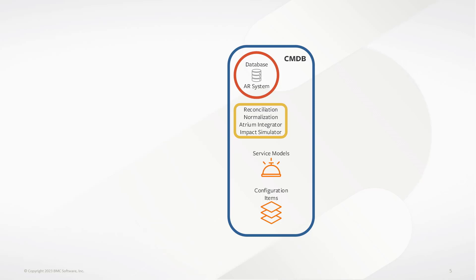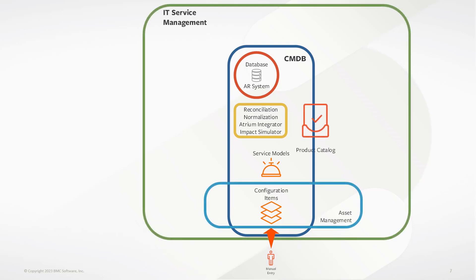How do you get your CIs into your environment? The first and most obvious option is manual entry — anyone can type it in. That's where ITSM comes into play via asset management, which sits on top of CMDB. Asset management and CIs have a tight relationship with each other — not necessarily one-to-one, but for this discussion let's assume a one-to-one relationship. You also have things like the product catalog, which drifts over into ITSM and CMDB.